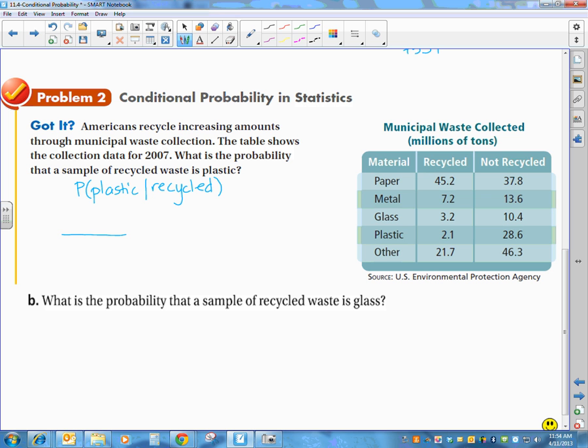Again, find out the total amount of recycled. Add that all up, you're going to get 79.4. And how much of that is plastic? 2.1. So I have 2.1 over 79.4. You can't leave a decimal in a fraction because that would be a complex fraction and not simplified. So I move the decimal over 1 in each spot, like multiplying by 10. And then that cannot be reduced.